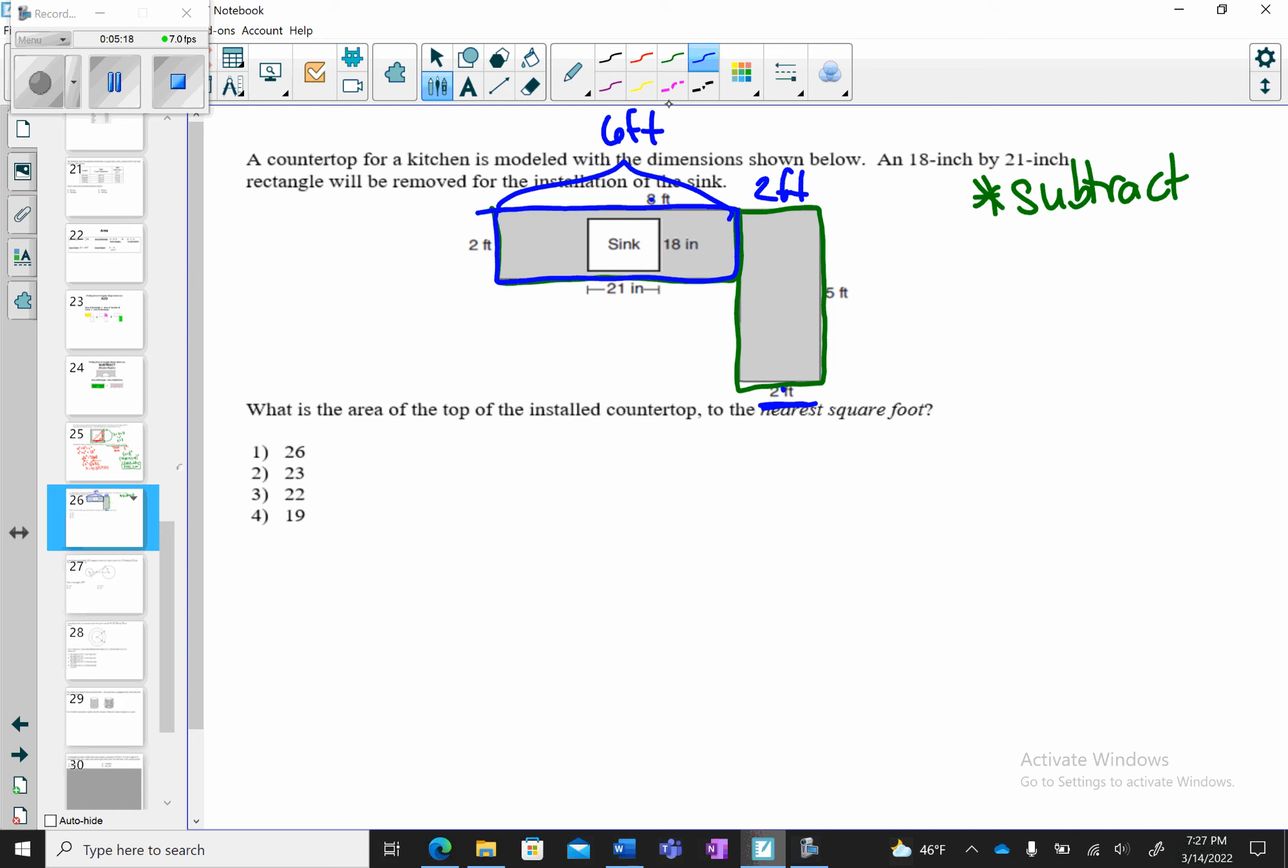So I'm going to add this together, my total areas of both. So I have a rectangle, so I'm going to do the area of the rectangle outlined in blue, which is 2 times 6. And I'm going to add it to my rectangle outlined in green, which is going to be 2 times 5. But I want to remove the sink.